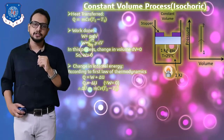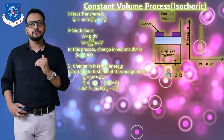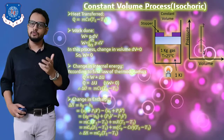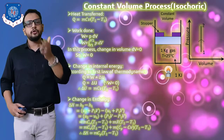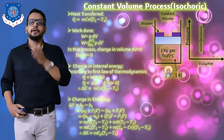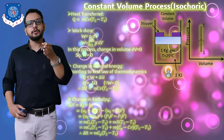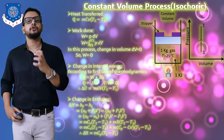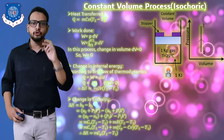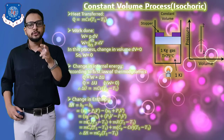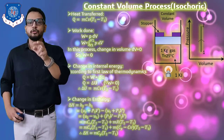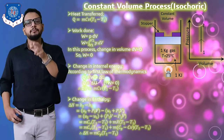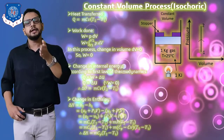Now the fourth task: determine the change in enthalpy. We know ΔH = H2 - H1, and enthalpy H = U + pV (internal energy plus flow energy). We need to show this stepwise: H2 = U2 + p2V and at state 1, H1 = U1 + p1V. Since volume is constant, we write H2 - H1 = (U2 - U1) + (p2V - p1V).